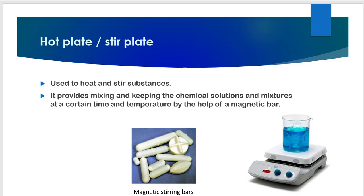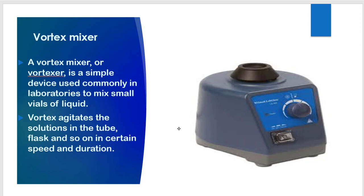Moving ahead, we have the vortex. A vortex mixer or vortexer is a simple device commonly used in laboratories to mix small vials of liquid. If I have a small vial and put a sample into it, the liquid may stick to the sides of the vial or the cap. I want all my sample to settle down at the bottom of the tube, so the vortex agitates the solution and brings down all small droplets of the sample. It agitates the solution at a certain speed and duration.